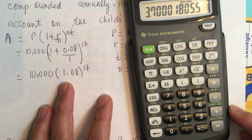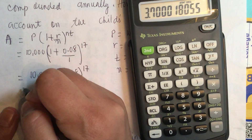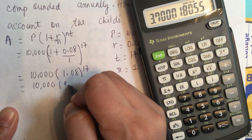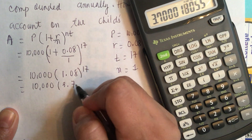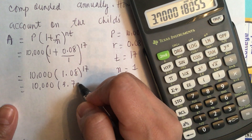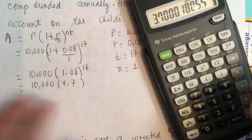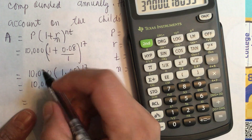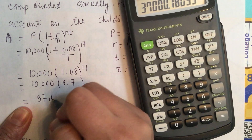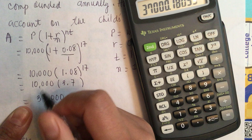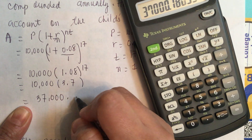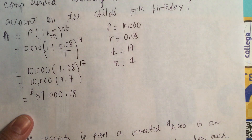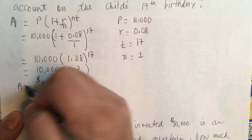1.08 to the 17th power is equal to approximately 3.7003. So the total amount is ten thousand times 3.7003, which gives us approximately thirty-seven thousand dollars. This is the total amount they will get after 17 years.